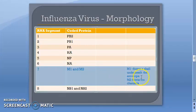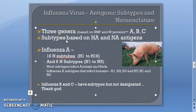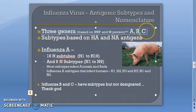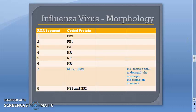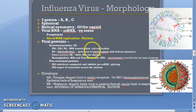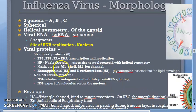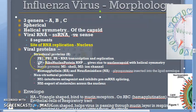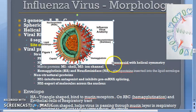The seventh RNA segment codes for the matrix protein — M1 is the shell and M2 is the ion channel. Now for the main topic: antigenic subtypes, nomenclature, and antigenic variation. There are three genera — A, B, and C — based on the RNP (nucleoprotein) and the M protein. RNP is the ribonucleoprotein forming the nucleocapsid with helical symmetry.